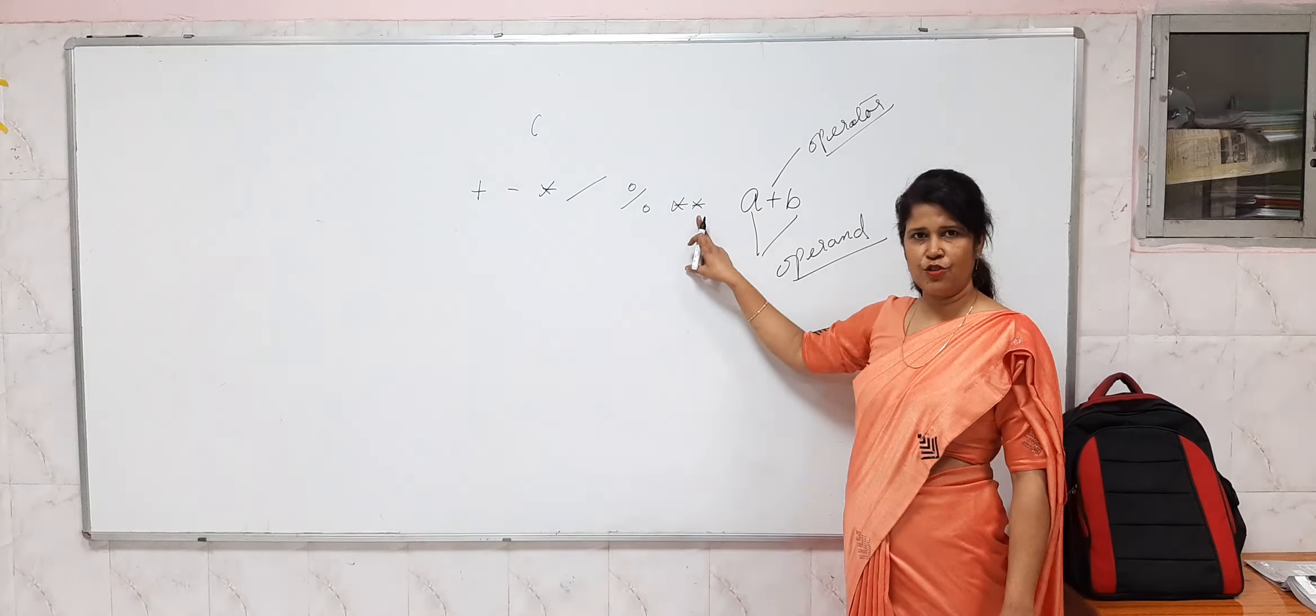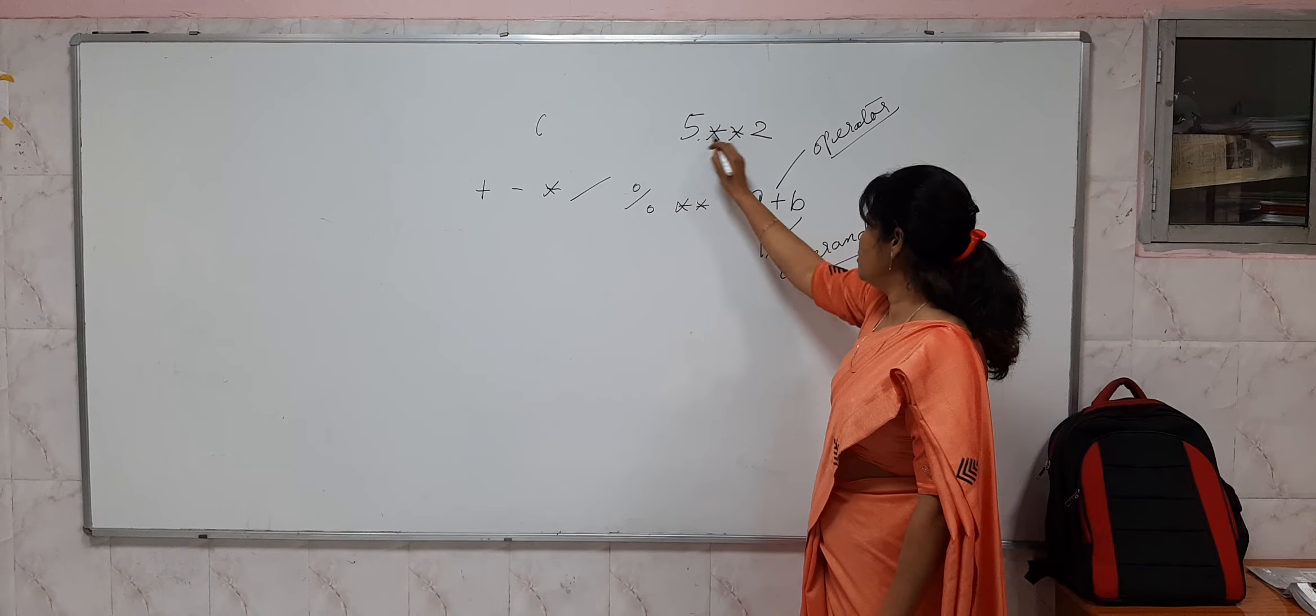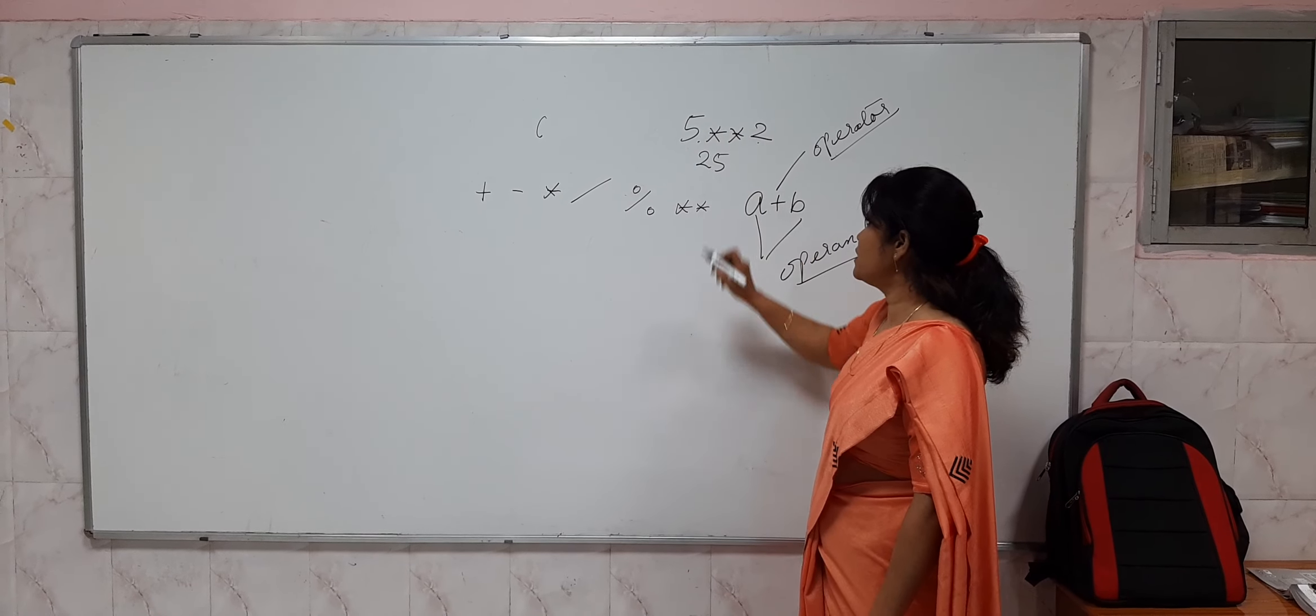For exponent we have double asterisk. If I write 5 double asterisk 2, that means 5 to the power of 2 equals 25.